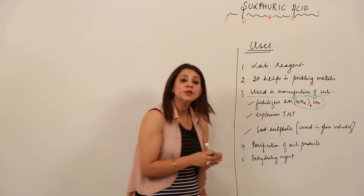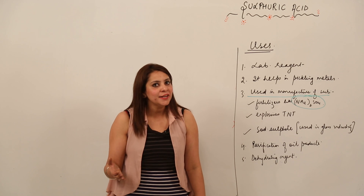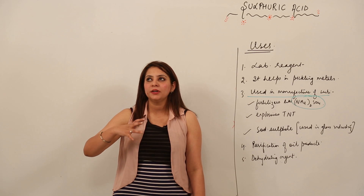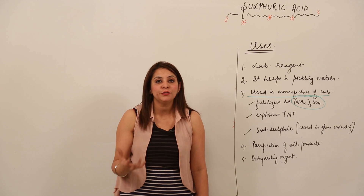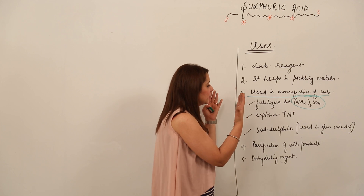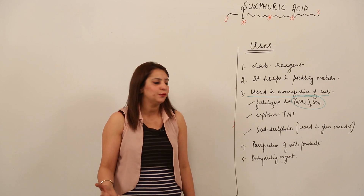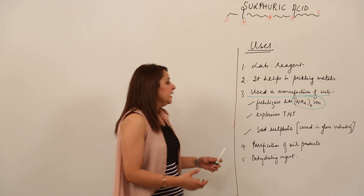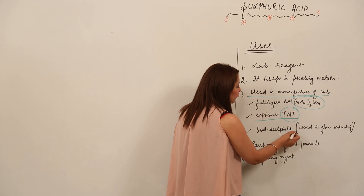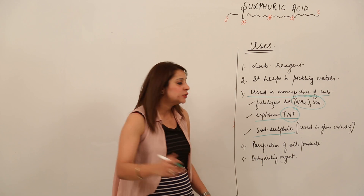Third, it helps in the manufacturing of certain substances. It helps in the manufacturing of fertilizers — most famously ammonium sulfate, which is popular in the field of agriculture. Many other fertilizers are also formed with the help of sulfuric acid. It also helps in the formation of explosives like TNT.